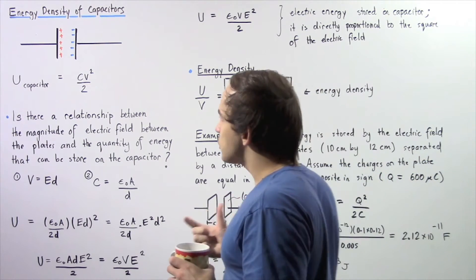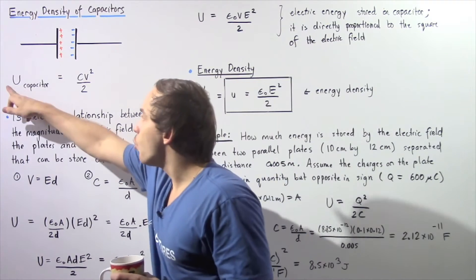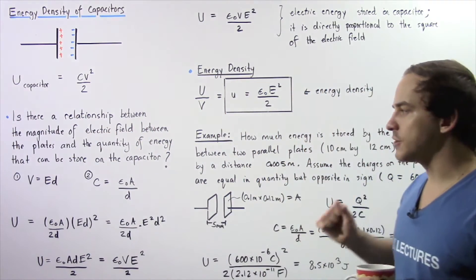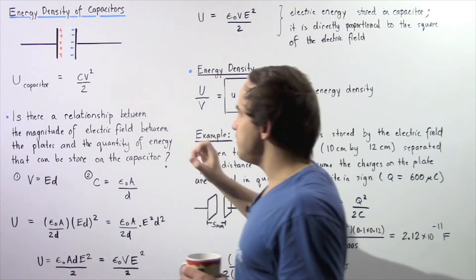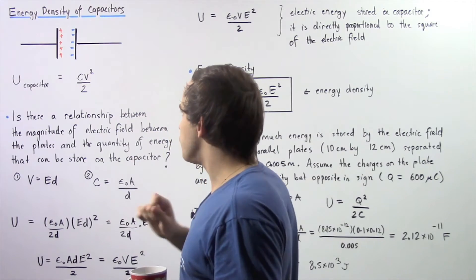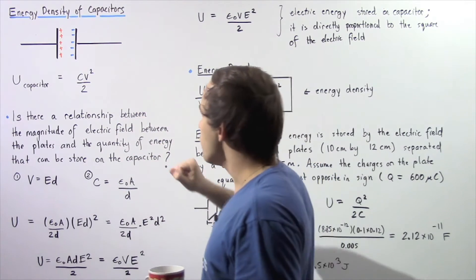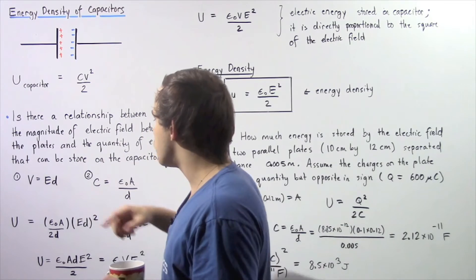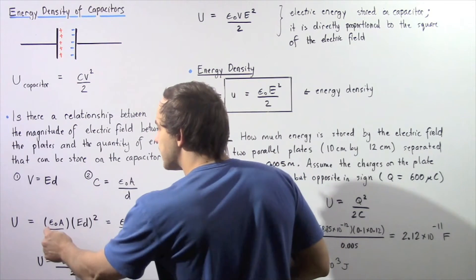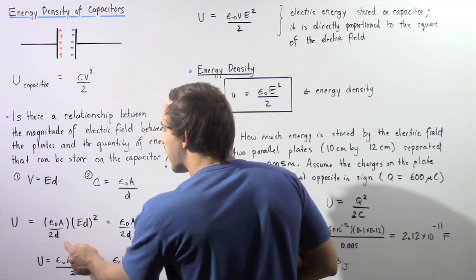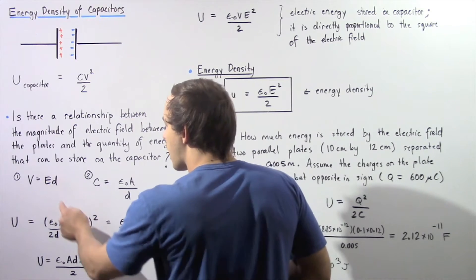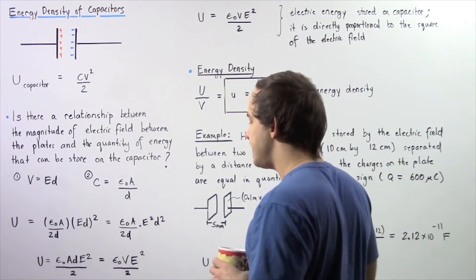We essentially want to represent our quantity of electric energy in terms of the electric field. We begin with the energy equation and replace our capacitance with the ratio ε₀A/d and the voltage with the product Ed. So now we have one-half multiplied by epsilon naught multiplied by A divided by d, multiplied by the square of the product E times d.